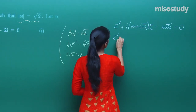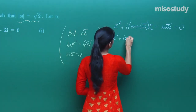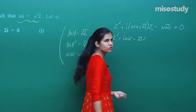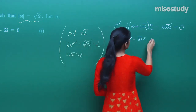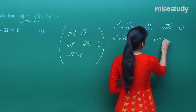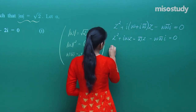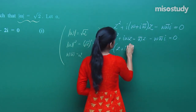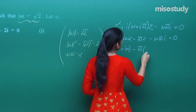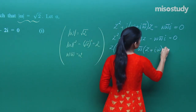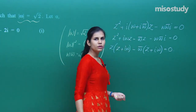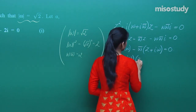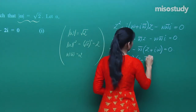If you expand this, you get iota omega z minus omega bar z, because iota times iota is iota squared which is minus 1, and you are left with omega omega z. Taking z common, you are left with z plus iota omega. Taking omega bar common, you are left with z plus iota omega. Therefore, two factors pop up: z plus iota omega and z minus omega bar.